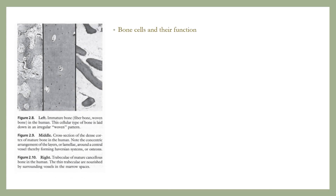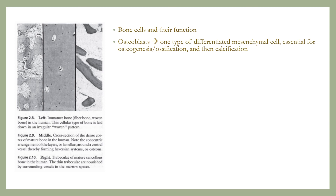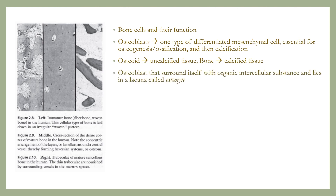Bone cells and their function: the osteoblast is one type of differentiated mesenchymal cell, essential for osteogenesis or ossification, and then calcification. Osteoid is uncalcified tissue, whereas bone is calcified tissue. An osteoblast that surrounds itself with organic intercellular substance and lies in a lacuna is called an osteocyte. Osteocytes receive their nutrition from tissue fluid derived from regional blood vessels, in horizontal Volkmann's canals and in longitudinal Haversian canals.